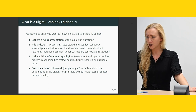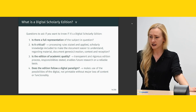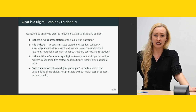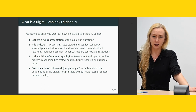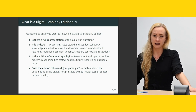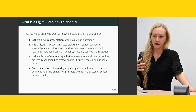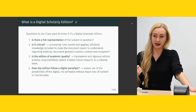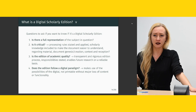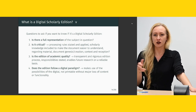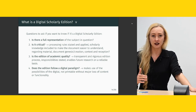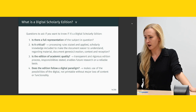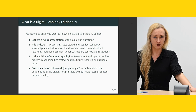To sum up: questions to ask if you want to know whether something is a digital scholarly edition. Is there a full representation of the subject? Is it critical — are processing rules stated and applied, and is scholarly knowledge included to make the document easier to understand regarding material, document genesis, creation, context and reception? Is the edition of academic quality — transparent and rigorous edition process, stated responsibilities, enabling future research on a reliable basis? This is very important in digital scholarly editing: in the early days of the internet, it was not a trustworthy source, so best practices have integrated mechanisms for creating authority. The edition must be citable; in a digital edition project, many people are involved and you need to state who did what so others can judge scholarly quality.